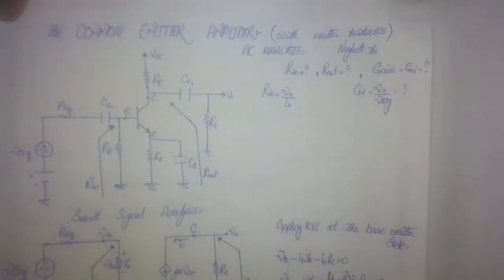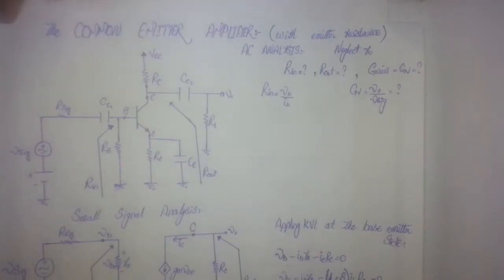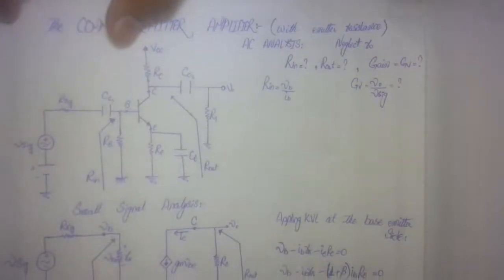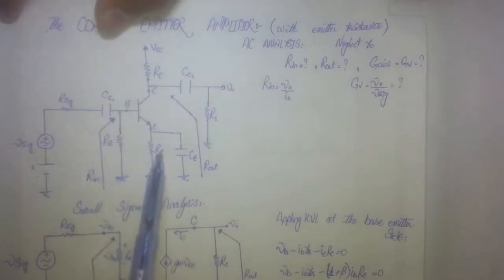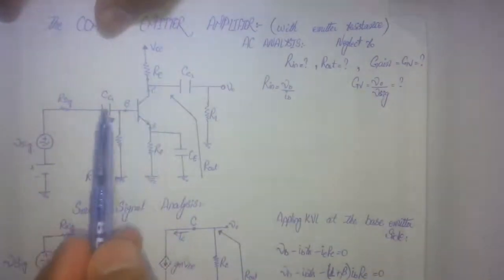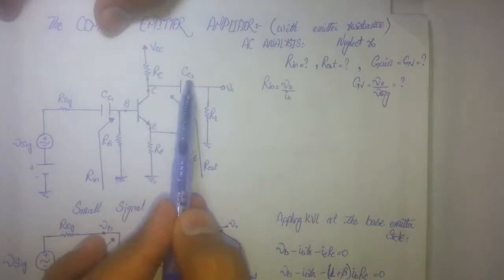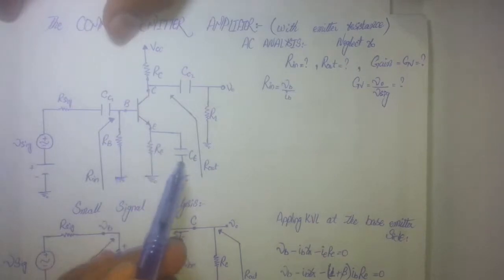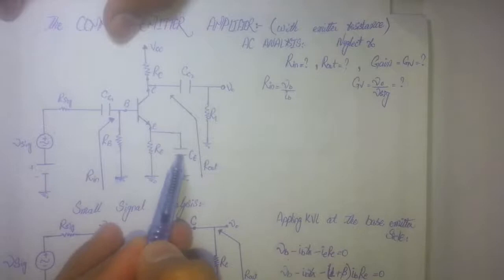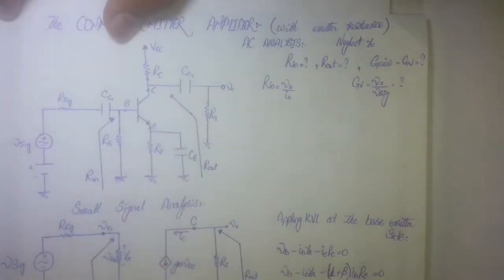In this video I am going to show you how you can find the RN, RB, and Rout of this common emitter amplifier with source resistance. As you can see in this diagram, we have a BJT. On one side is the collector resistance, this is the emitter resistance, and this is the base resistance. Here we have two capacitors — one on the base side, one on the collector side, and the third one on the emitter side.